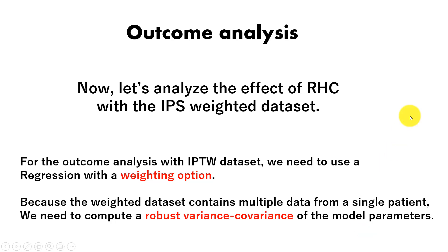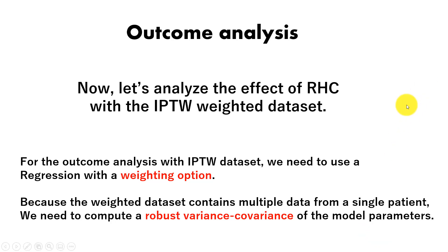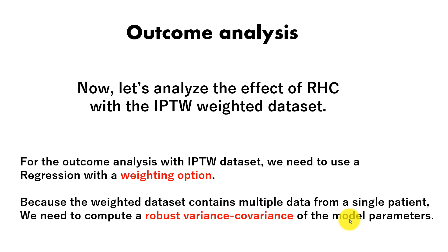Now let's analyze the effect of right heart catheterization with the weighted dataset. The important things for outcome analysis with the weighted dataset are that we need to use regression with the weighting option, and because the weighted dataset contains multiple data from a single patient, we need to compute the robust variance-covariance of the model parameters. These two things are different from the regular analysis.